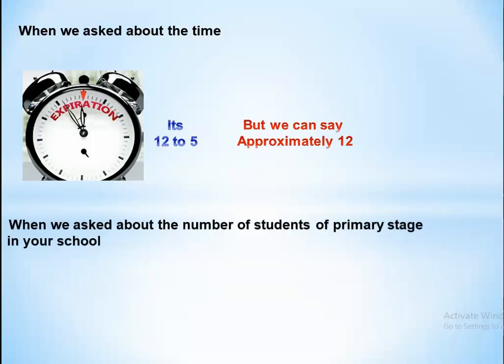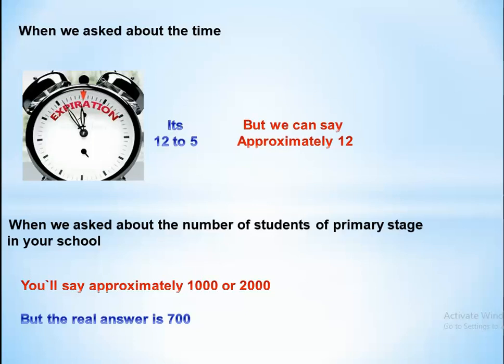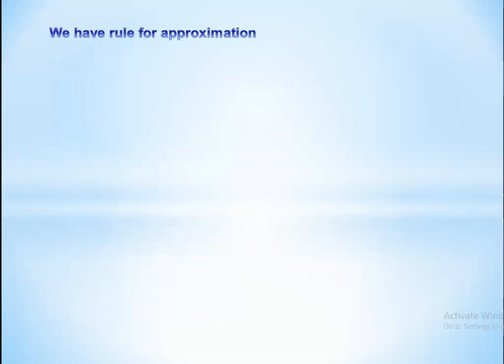When I ask you about the number of students of primary stage in your school, you will say approximately 1,000 — but the real number is 700. So 1,000 is the nearest answer to 700. We have a rule for approximation.